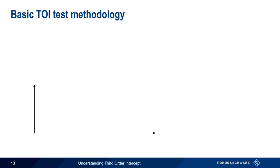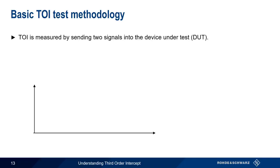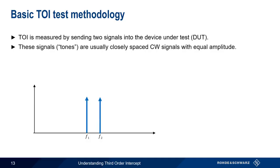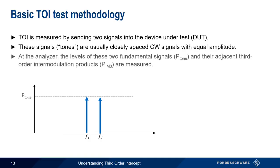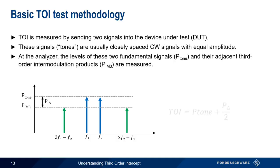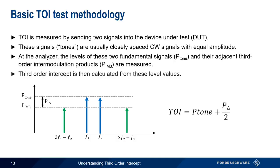We calculate or measure third-order intercept by sending two signals or tones into the device under test. These are usually closely spaced unmodulated, or CW, signals with equal amplitude. We measure the amplitude of these two fundamental signals or tones, as well as the amplitudes of the adjacent third-order products. Using the difference in power between the fundamentals and the third-order products, and a simple formula, we can then calculate third-order intercept, or IP3.